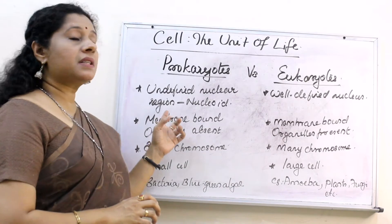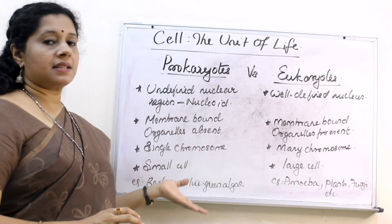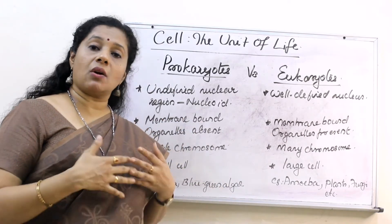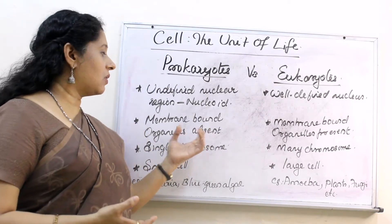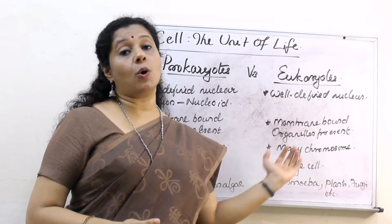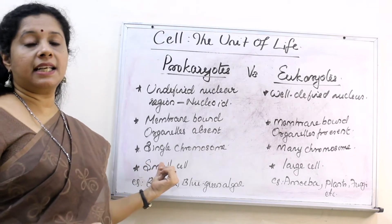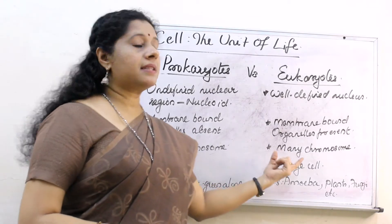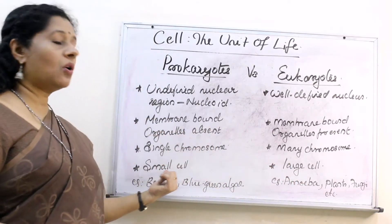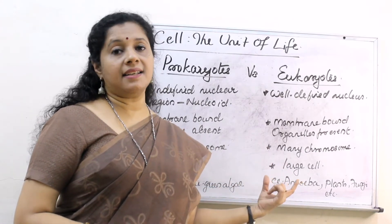The first and fundamental difference between prokaryotes and eukaryotes is the nucleus. Since there is no membrane-bound nucleus in prokaryotes, other membrane-bound structures called cell organelles are also absent. Eukaryotes, however, have all membrane-bound cell organelles present. Prokaryotes also have a single chromosome whereas eukaryotes have many, and prokaryotic cells are comparatively smaller in size.